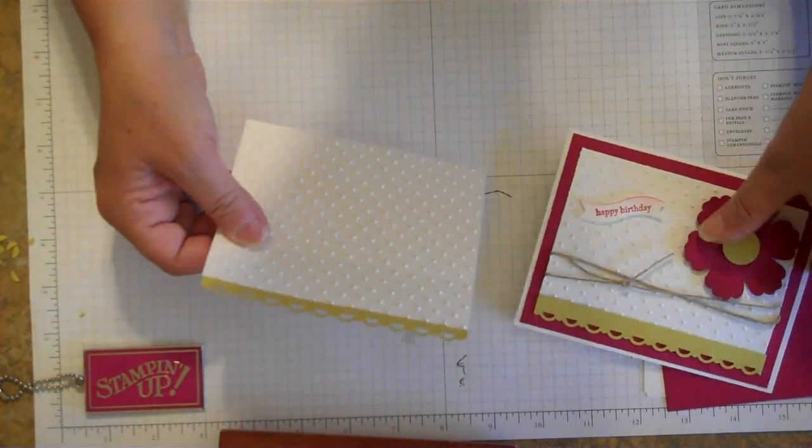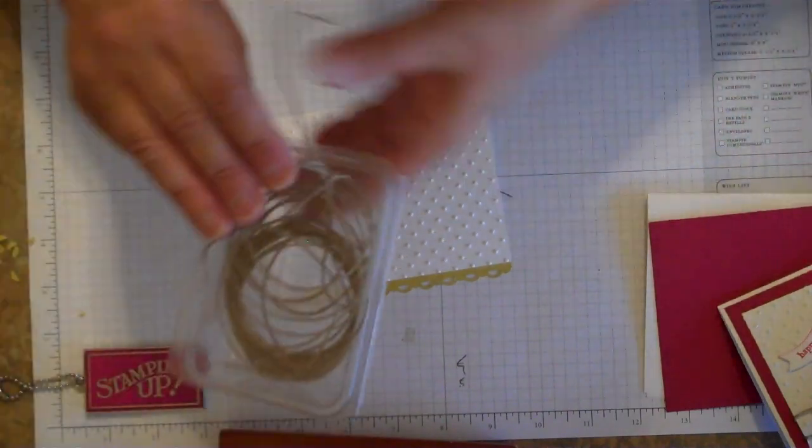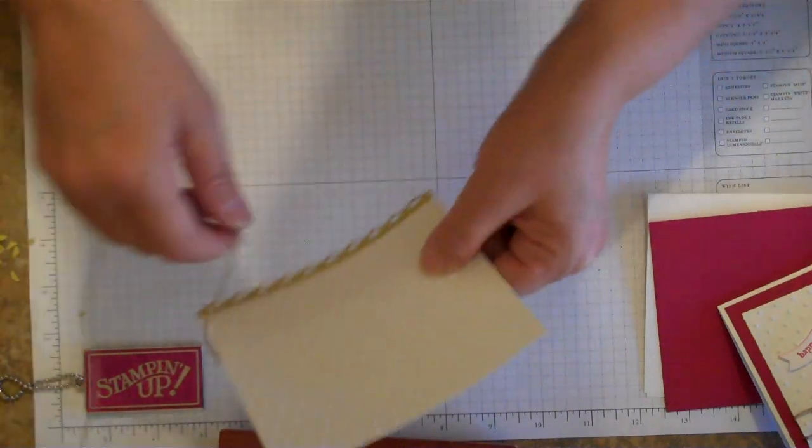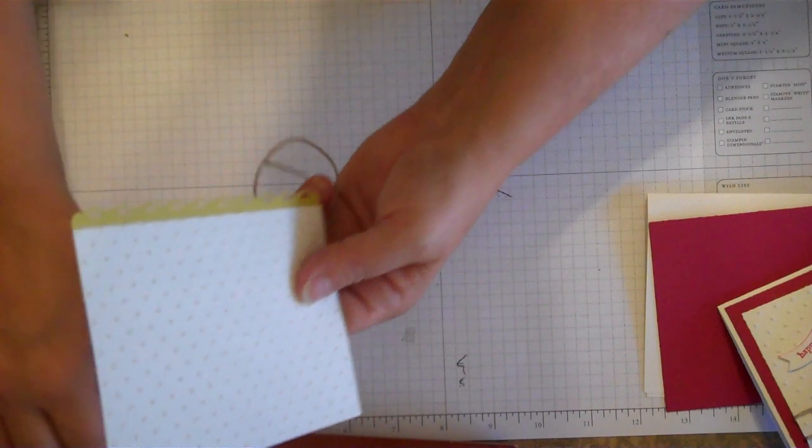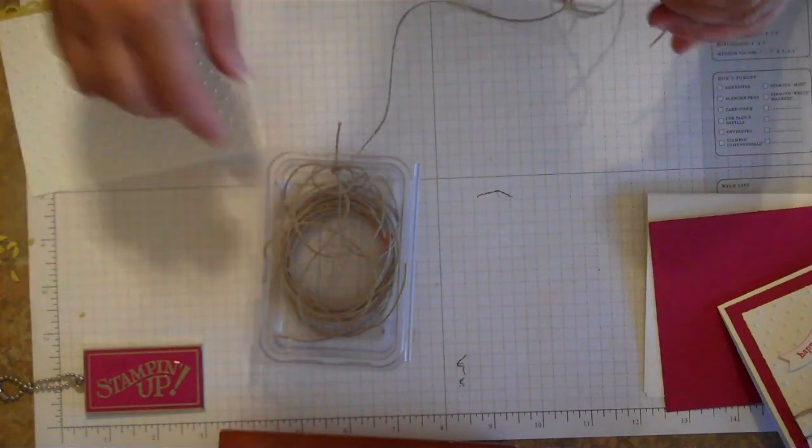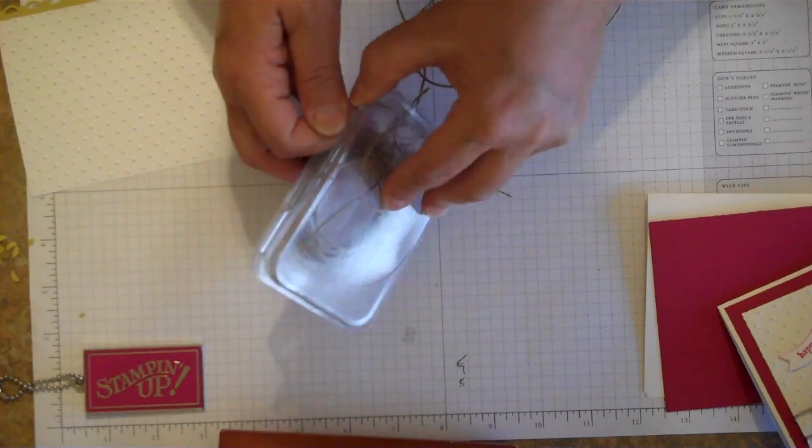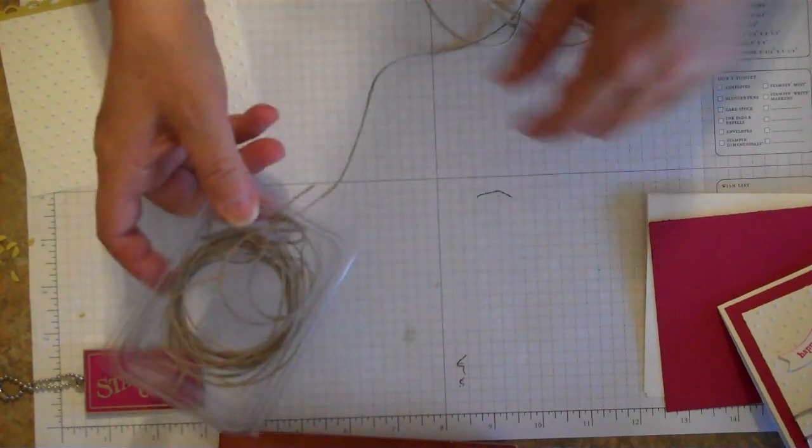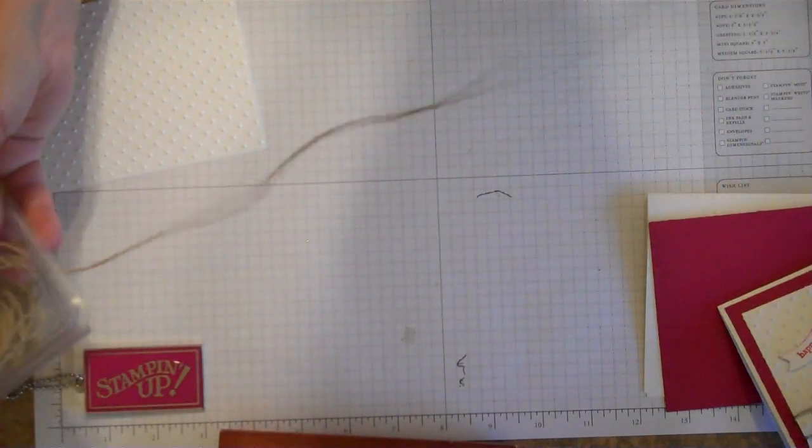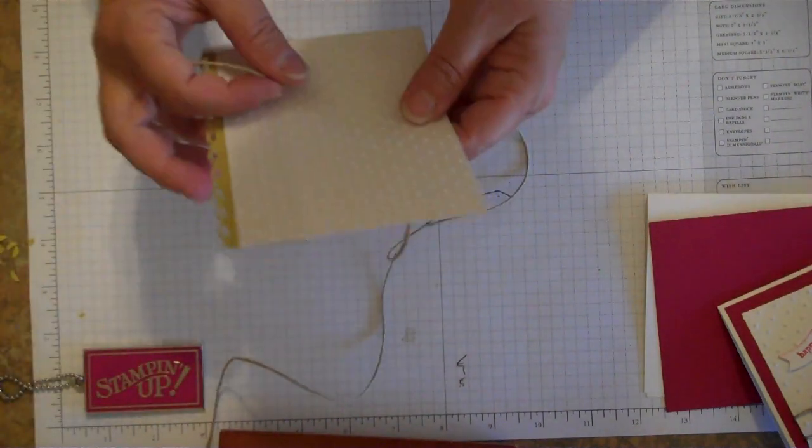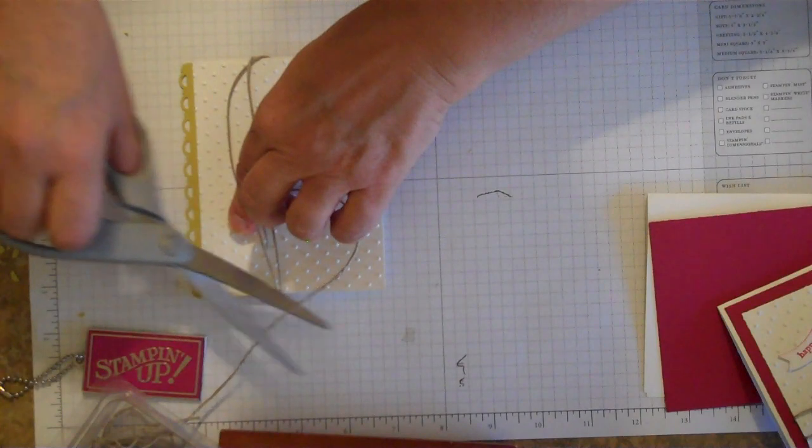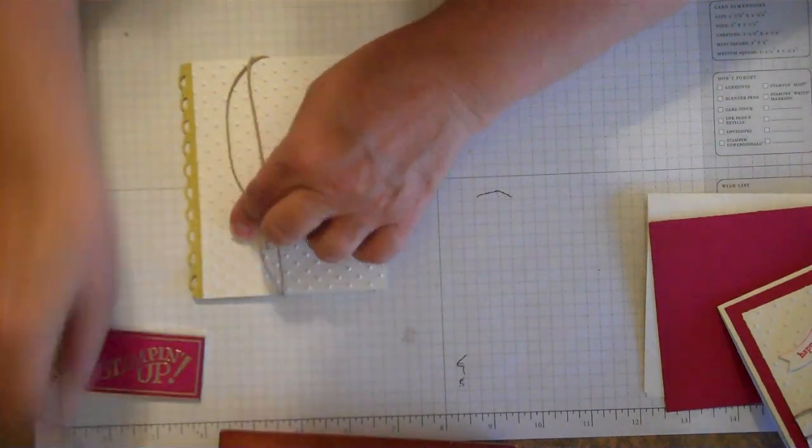And then the next part is we're going to be taking some twine and we're going to run that around the back of the Whisper White cardstock a couple of times and then just knot it in the front. And I got this tip from somebody at Stampin' Up headquarters. If you have an extra little box laying around from an empty stamp set, just cut a hole in the bottom or side, and be able to run your twine through that so it doesn't get all tangled up. I love that tip. So we're going to wrap this around a couple times, cut that, and then it just stays nice and neat.